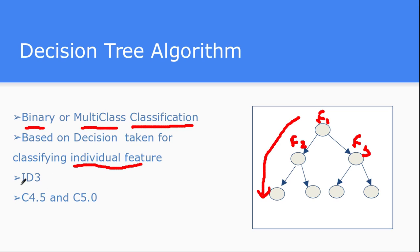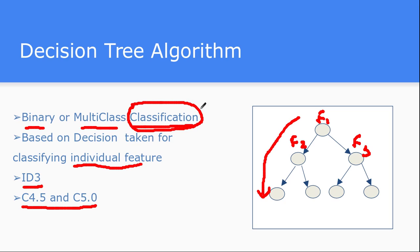Some algorithms in the decision tree family include ID3 and C4.5, which are variants of each other differing in computational complexity and features. Given training data, the model creates a decision tree where at each feature you decide where to go, and eventually based on the number of decisions taken you reach the conclusion that a sample belongs to a particular class. This is mainly useful for classification, supporting both binary and multi-class problems.